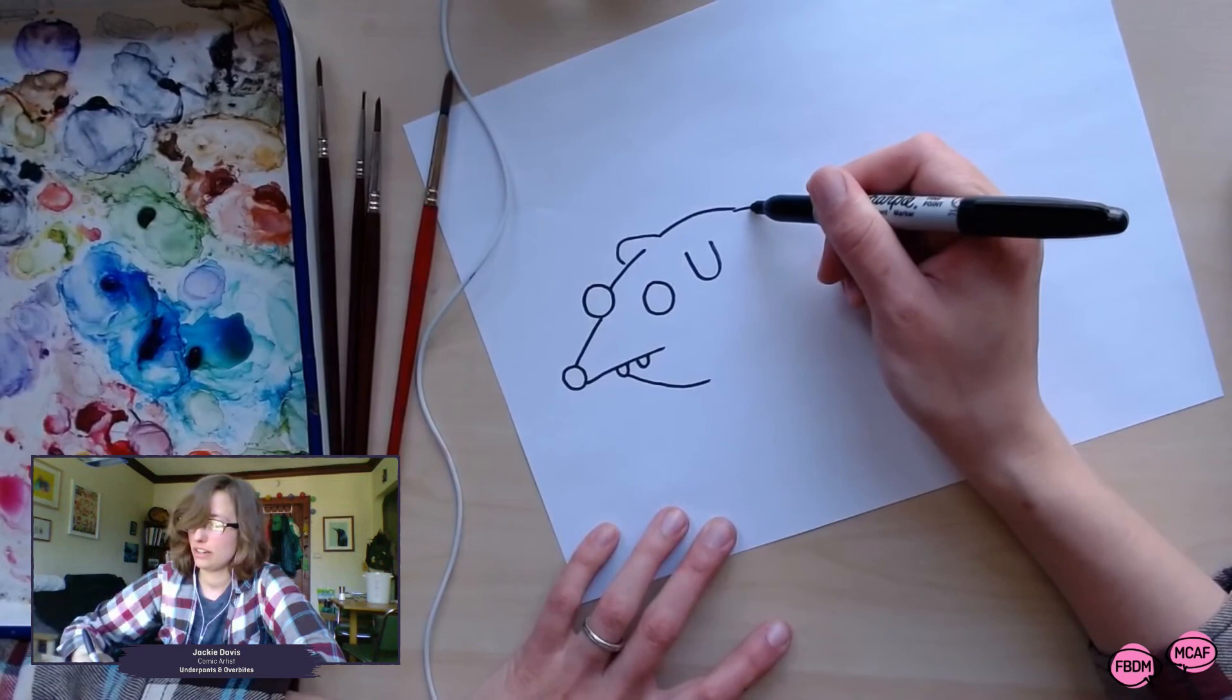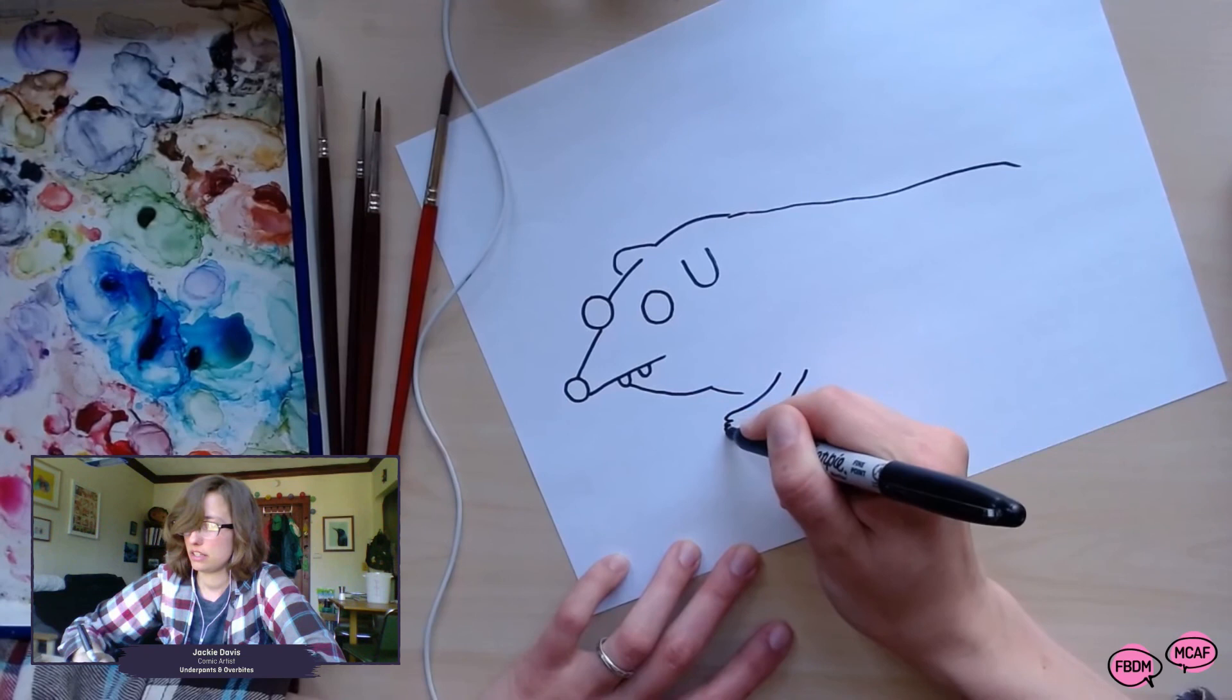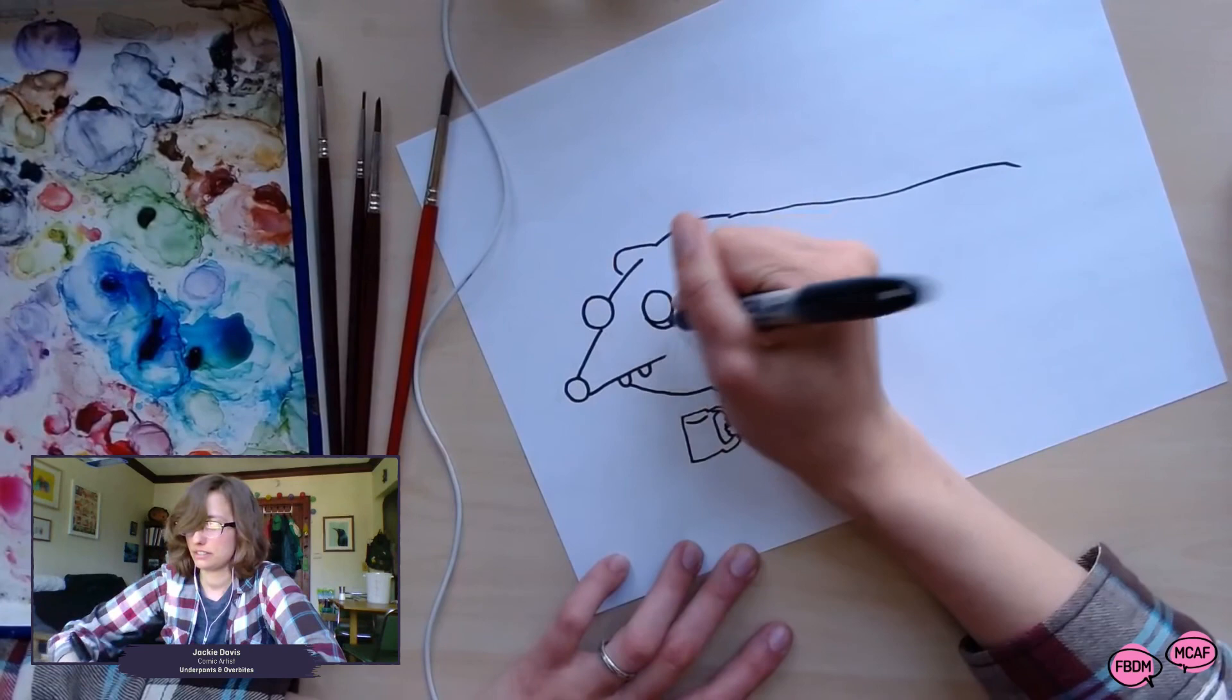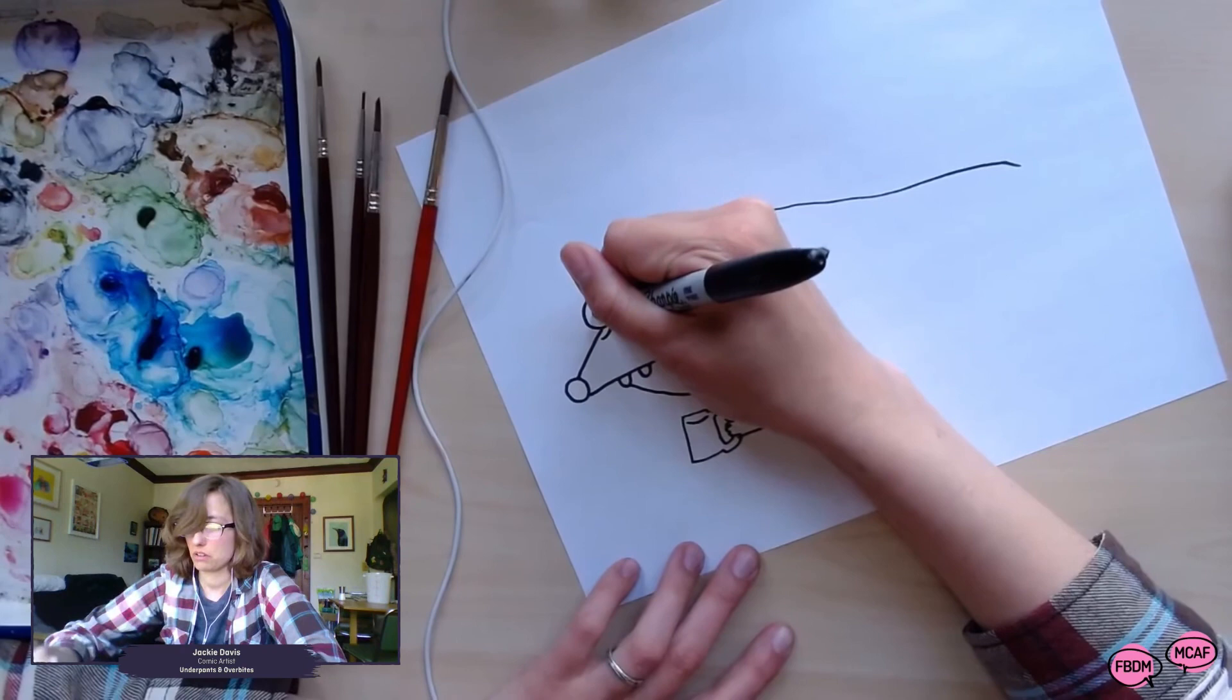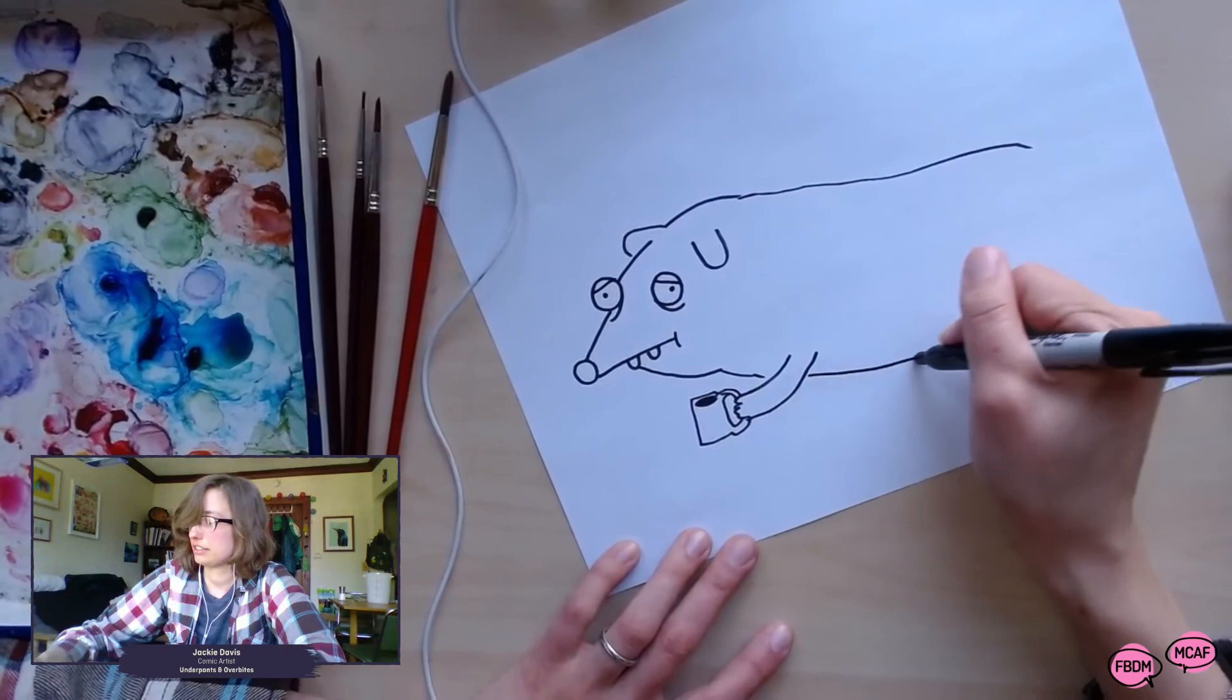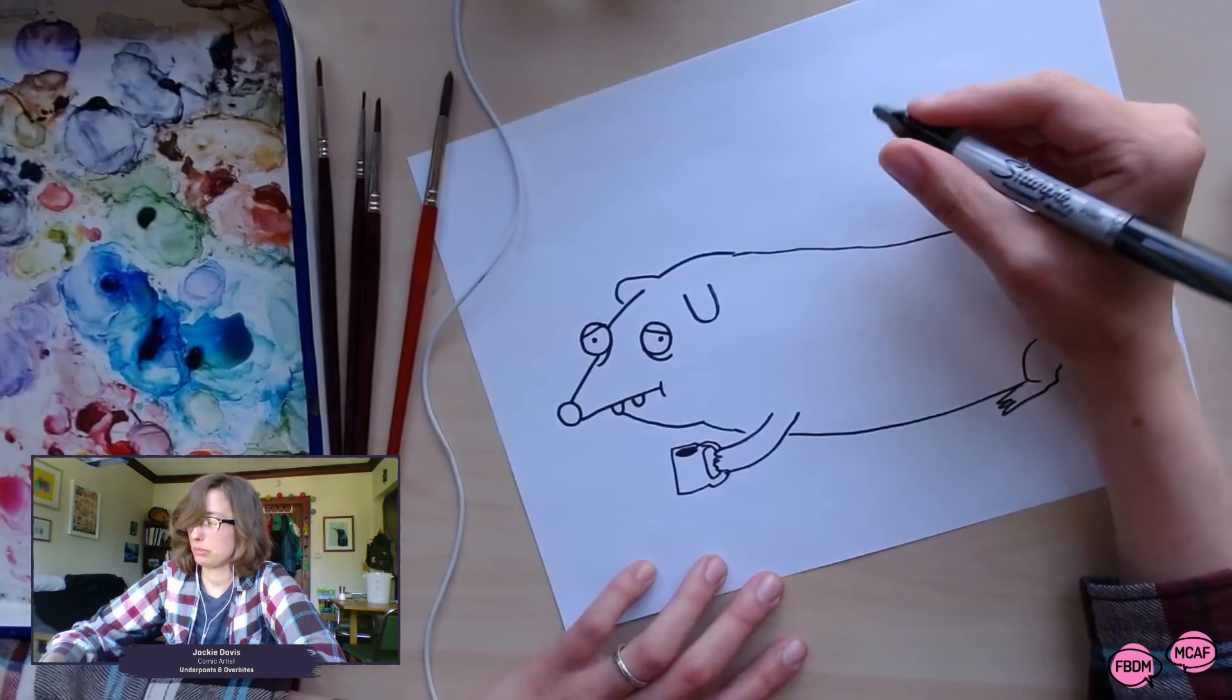Maybe the ferret will be drinking a tiny coffee. We're going to make this a really tired ferret. It's drinking coffee. I have no idea what ferret legs look like, or if they have tails, but I'm going to go with this kind of thing. And it'll be, I think it's being played on by its child ferrets.